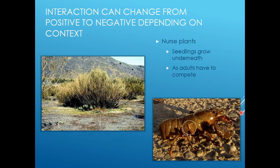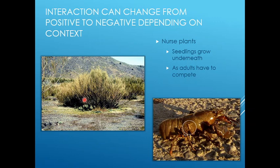The interaction can change to being negative depending on the context. Even if we consider nurse plants — they're really good for seedlings growing underneath them, and most of those little seedlings probably wouldn't have germinated and grown without the nurse plant protecting them from high vapor transpiration rates. But as those seedlings grow up, they're going to have to compete with an already established plant. So depending on the life stage, it might start as a commensalistic relationship but later become a competition scenario.